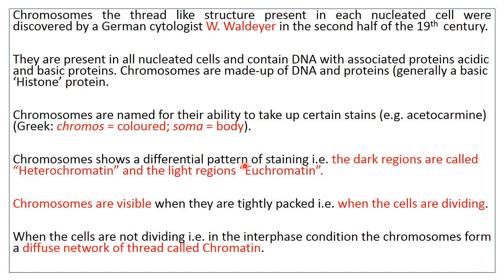Chromosomes are visible when they are tightly packed, that is, when the cells are dividing. In non-dividing cells, the chromatin fibers remain loosely bound, but when cells divide, these chromatin fibers get condensed into the form of chromosomes. When cells are not dividing — that is, in interphase conditions — the chromosomes form a diffuse network of thread called chromatin.